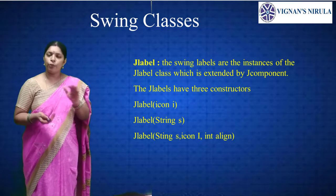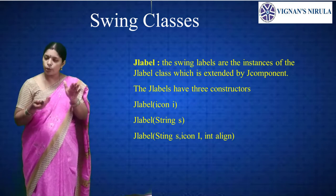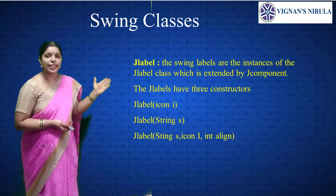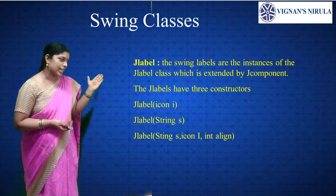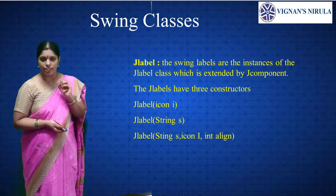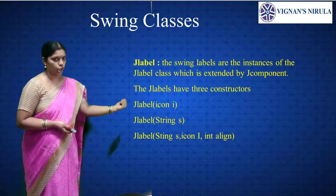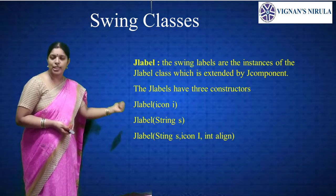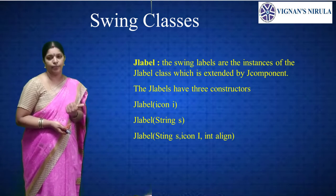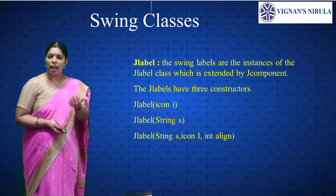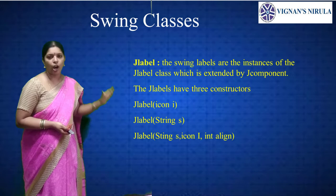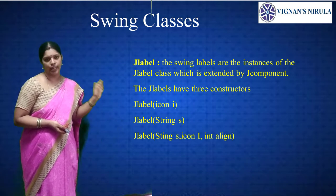Next, JLabels. String labels are instances of the JLabel class, which is extended by JComponent. JLabel has three constructors: JLabel(Icon i), JLabel(String s), and JLabel(String s, Icon i, int align). Here, 'align' specifies the position — middle, center, up, or down — where the label will be displayed.